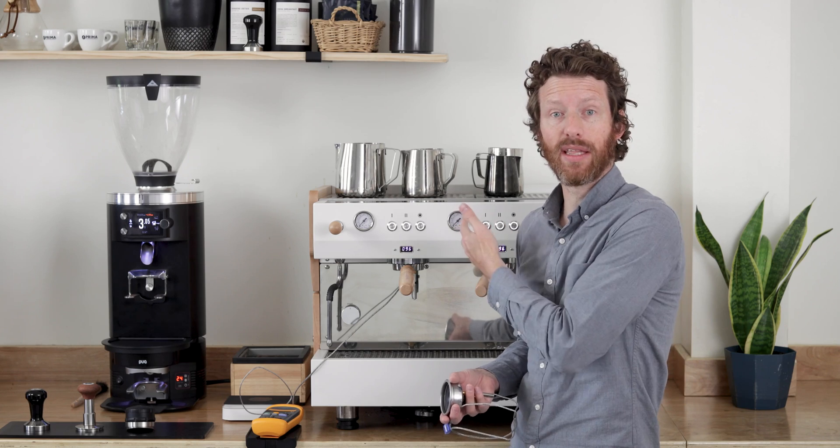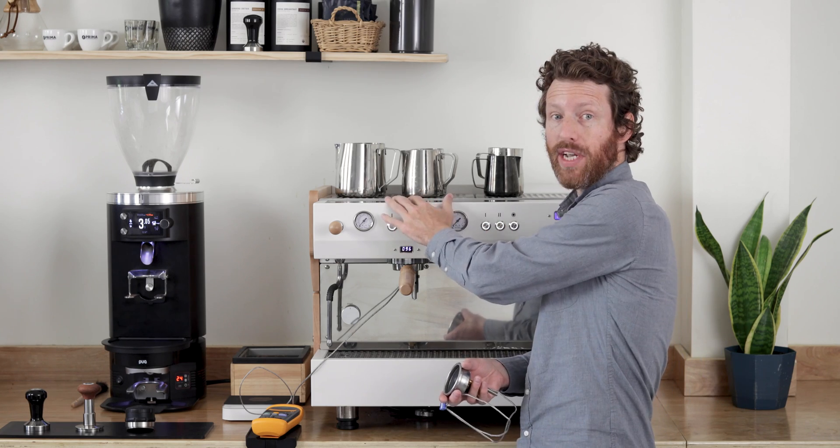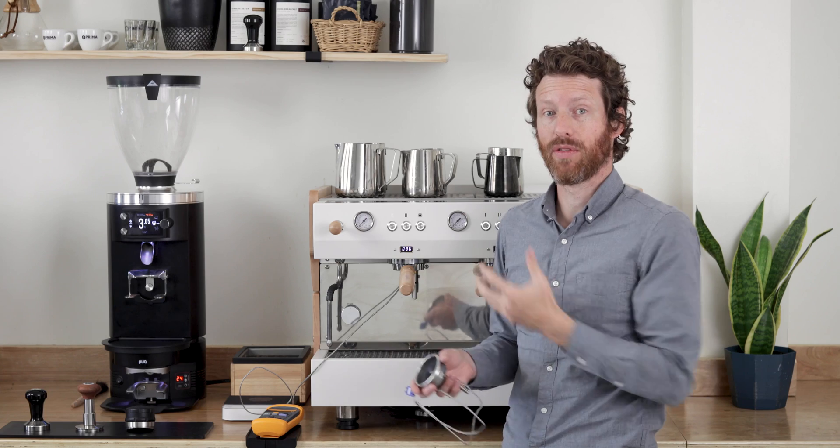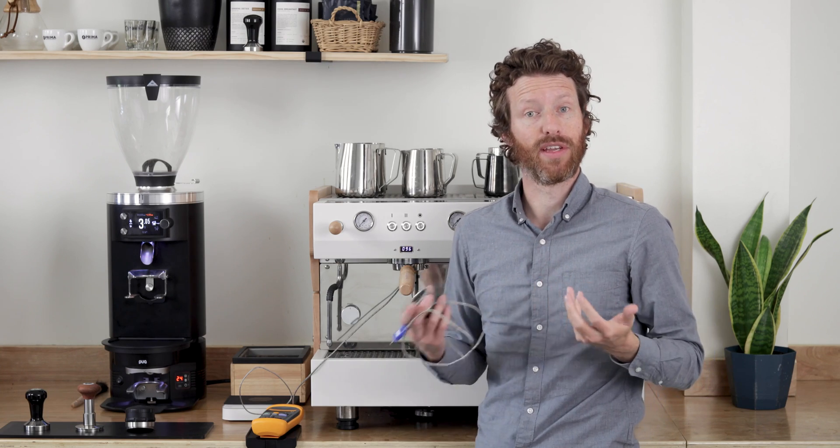Or if you have a machine like this, which is a multi-boiler machine, so there's a boiler for each individual group head, and you want to make sure that those match. And if not, you can set the offsets so that they do.